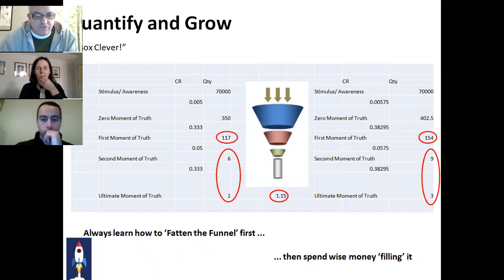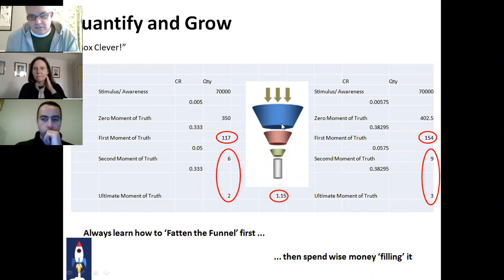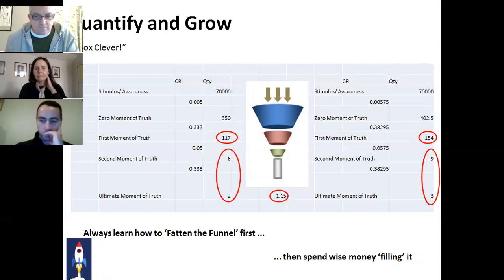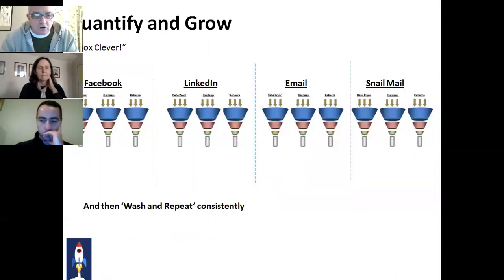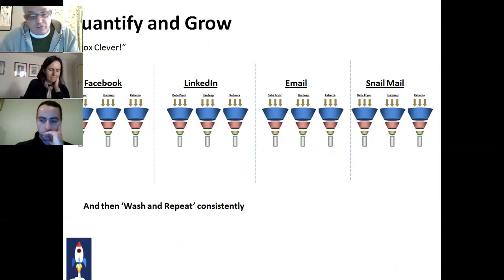What you want to do is understand how to fatten the funnel first, and then spend wise money filling it. Fattening the funnel first means understanding how you can make those conversion rates bigger so that you get a better bang for your buck. You want to make the funnel fatter — not losing so many people at each phase all the way through. Fatten the funnel first, then spend wise money filling it. Wash and repeat consistently — fatten the funnel in Facebook, then LinkedIn, then email and snail mail. If you have a full marketing department you can do all at once, but I would suggest doing one at a time.